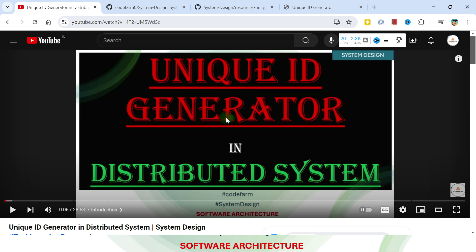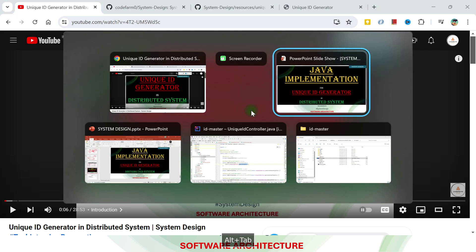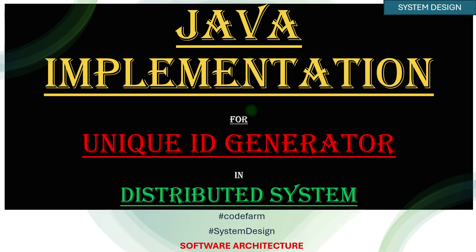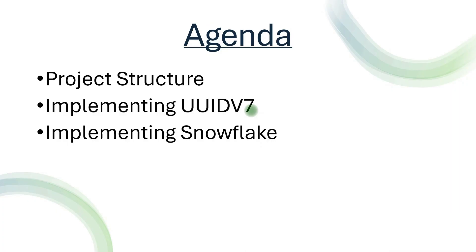The previous video covers a lot of things about unique ID generators: why they are needed, what the problem statements are, what the benefits are, and what different options are available. Among those options, two methods were UIDv7 and Snowflake, and there was database auto-increment as well. We are going to implement these because database auto-increment is pretty straightforward, and UIDv7 and Snowflake are algorithms we understood in the previous video.